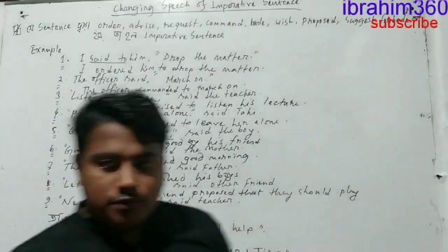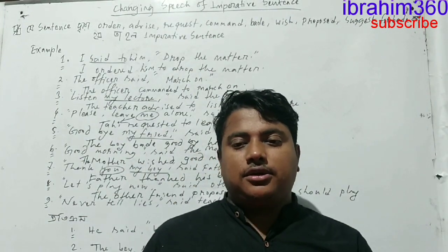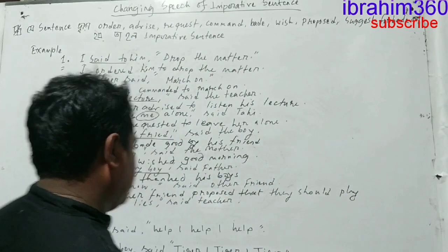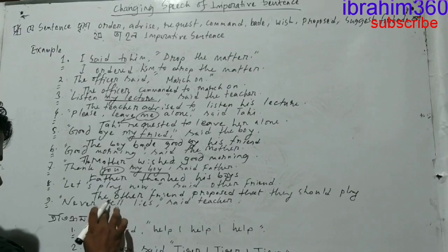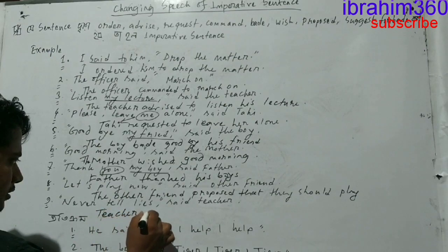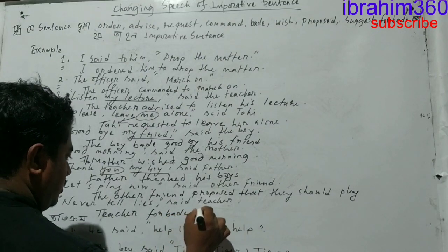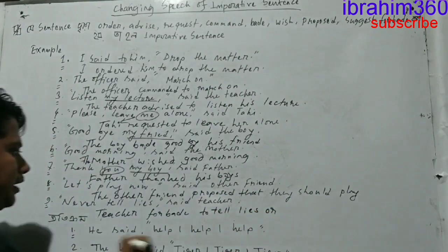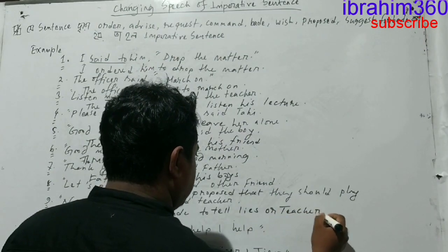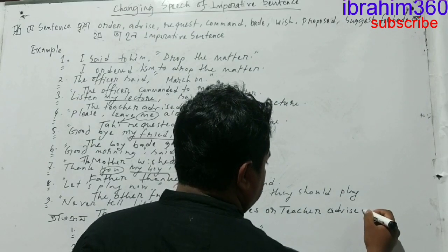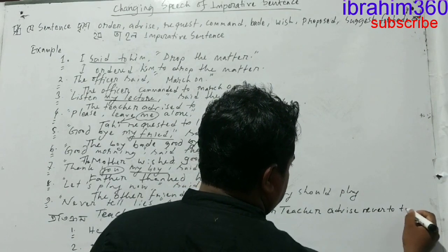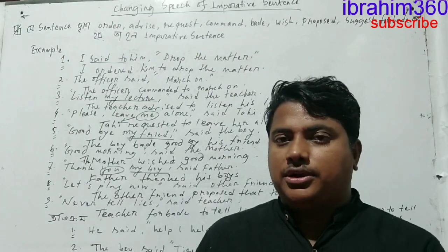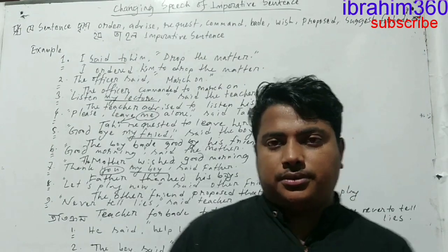Never tell lies. We know when 'do not', 'does not', 'did not' is present, or when 'never', 'no' begins the sentence — that means prohibition. When it means prohibition, we write 'forbid': teacher forbid to tell lies. Or: teacher advised never to tell lies. If we use 'advise', then 'never' or 'not' is added before 'to' — added before the linking word.